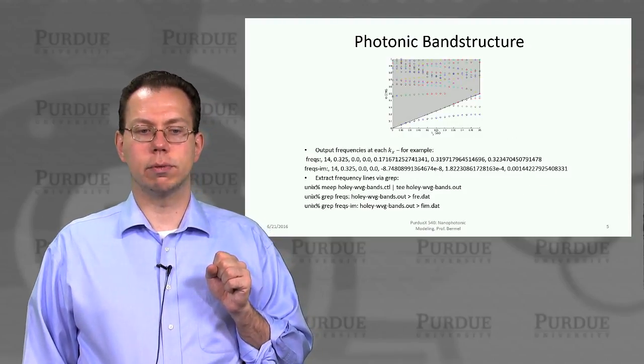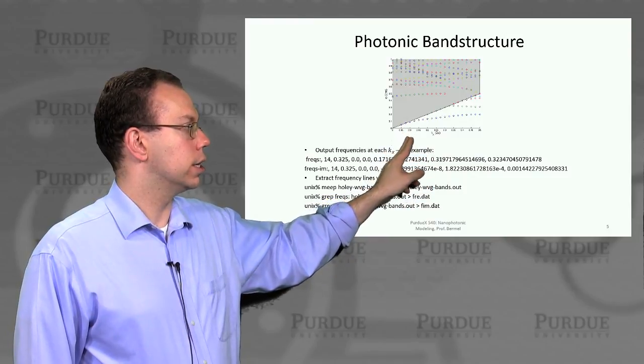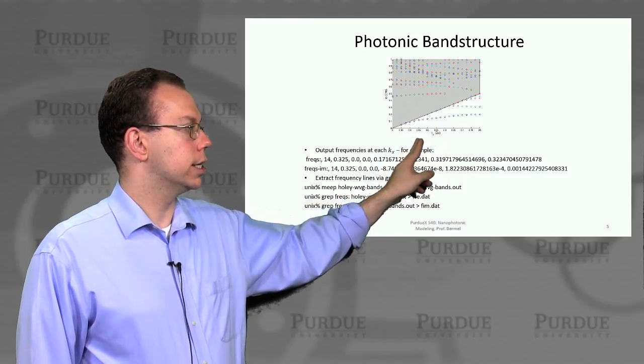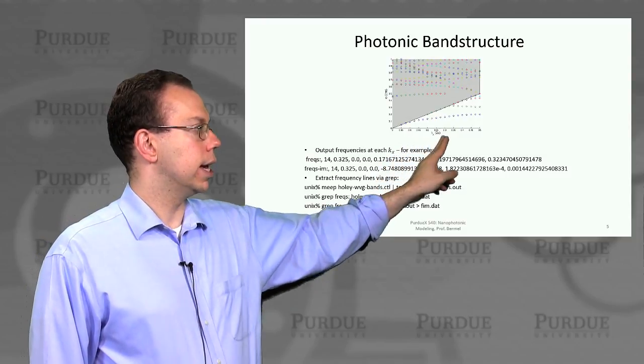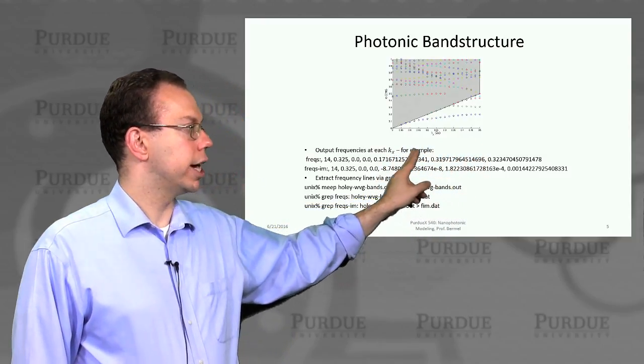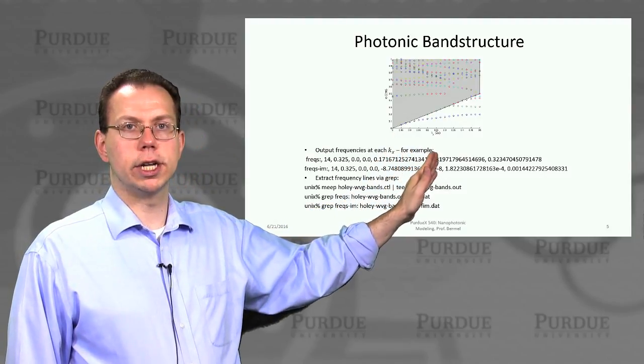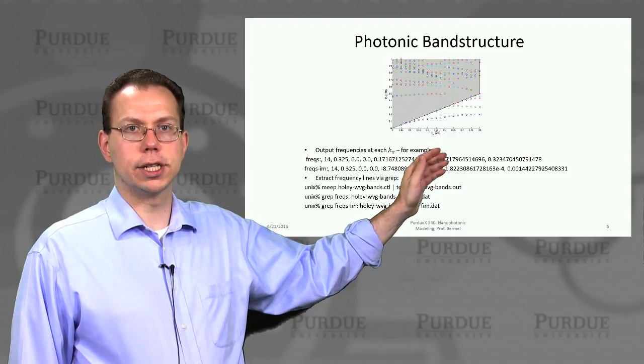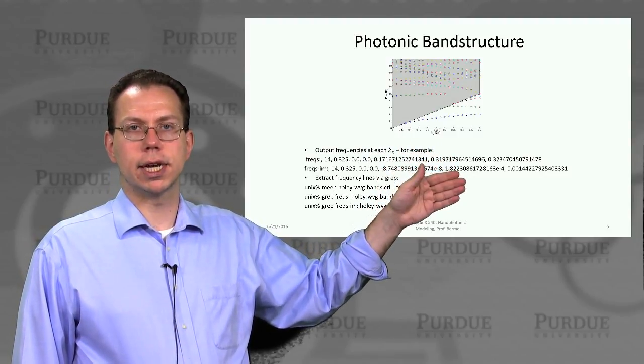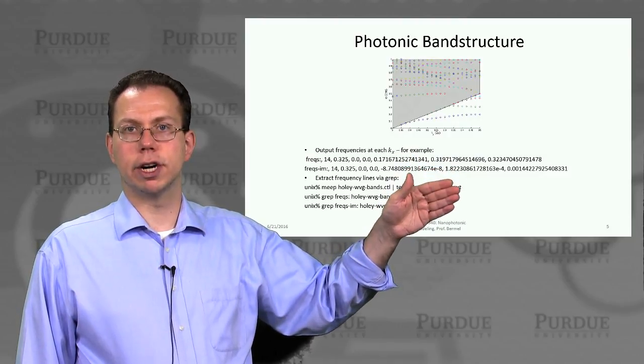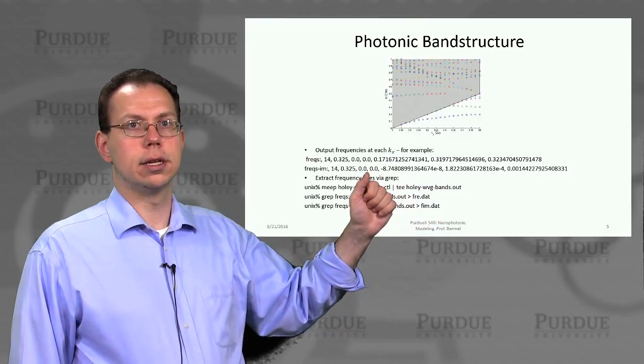And so here's kind of the output that you'll get for this sort of system. So you can see here in the x direction, this is the kx value, and we're basically going all the way to the edge of the Brillouin zone, which is at 0.5 in the reduced units. Remembering that period is 1, so that means that the Brillouin zone boundary in reduced units is 0.5, or more precisely, 0.5 times 2 pi over a